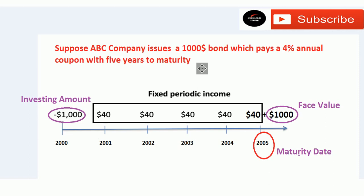I'll explain about coupon rate and coupon payments in our next videos, so for this video ignore those $40 payments. Now, as you know, the bond is issued for five years, and in 2005 you get your principal back. So the maturity date of this bond is 2005 in our example, because the bond has completed its defined lifespan and is now mature.